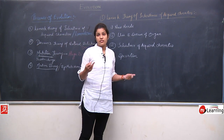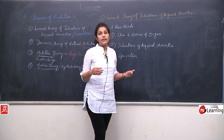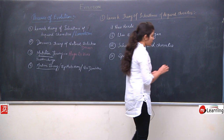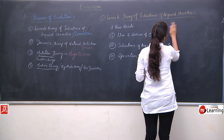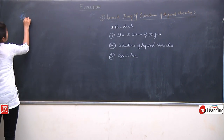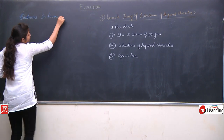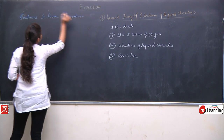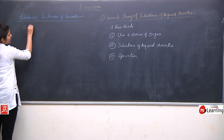Every theory has evidences in its favor and also criticism. Here we will discuss the evidences in favor of Lamarckism. The first example is that of the giraffe — new needs arose, it started stretching its neck and forelimbs, those characters were inherited, and a new species formed.